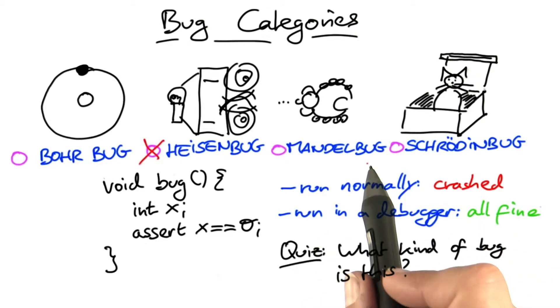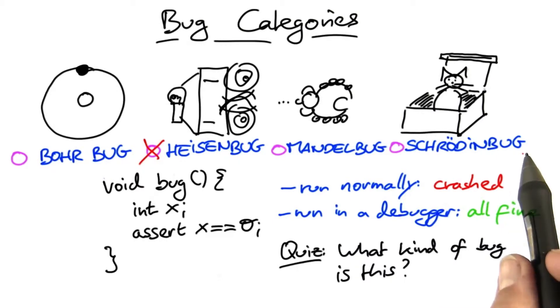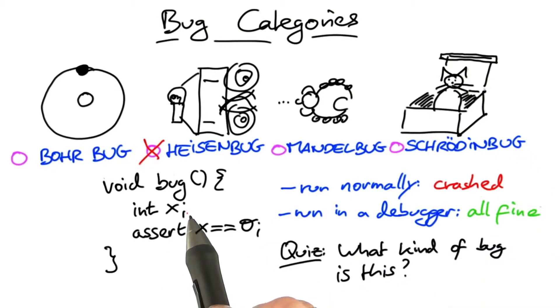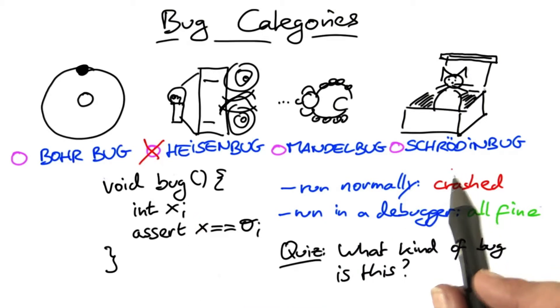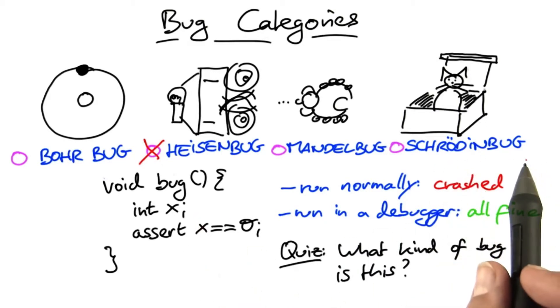Mandel bugs have very complex causes, not the case over here. And a Schroding bug appears as soon as somebody looks at this program and it promptly stops working. Not the case over here. I would love to see a Schroding bug in practice. It's a very interesting theoretical concept.